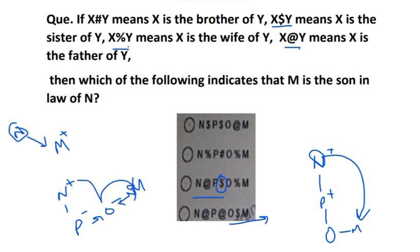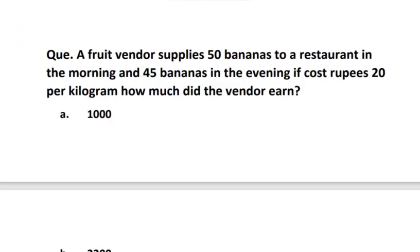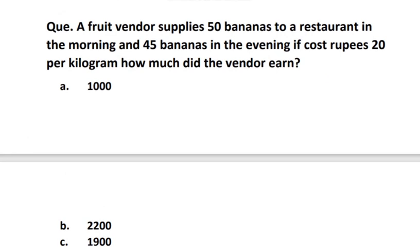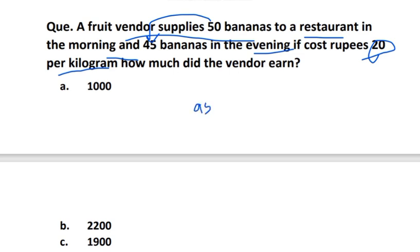Coming to the next question: A fruit vendor supplies 50 bananas to a restaurant in the morning and 45 bananas in the evening. The cost price of banana per kg is 20. So 50 kg in the morning and 45 kg in the evening means a total of 95 kg supplied. At the rate of 20 per kg, that means 95 into 20 - which gives us 1900. So the answer will be 1900.